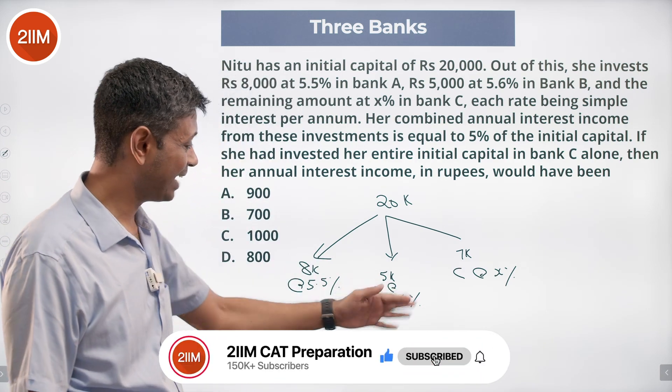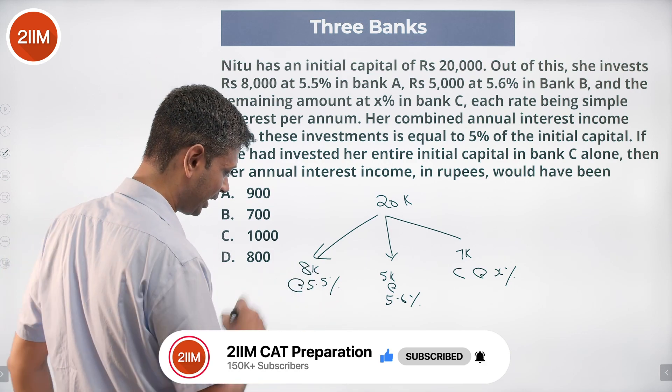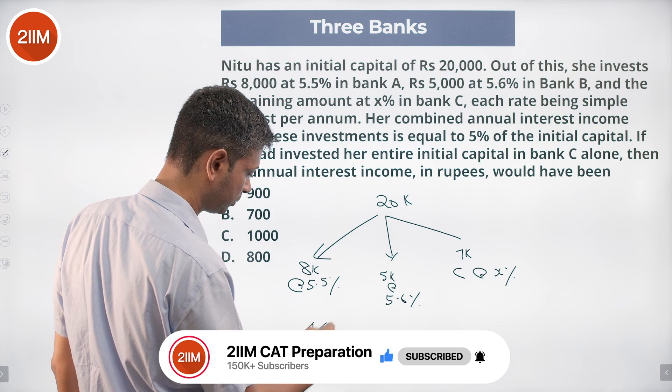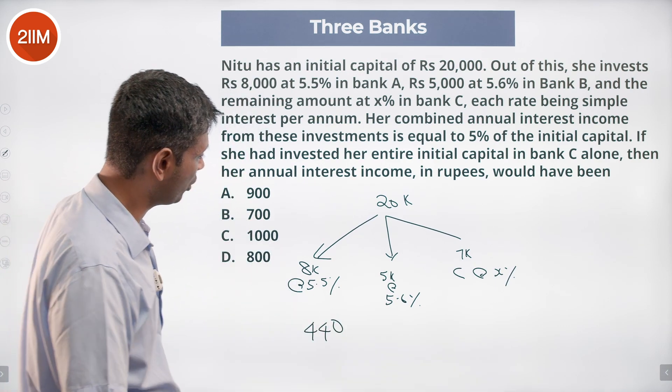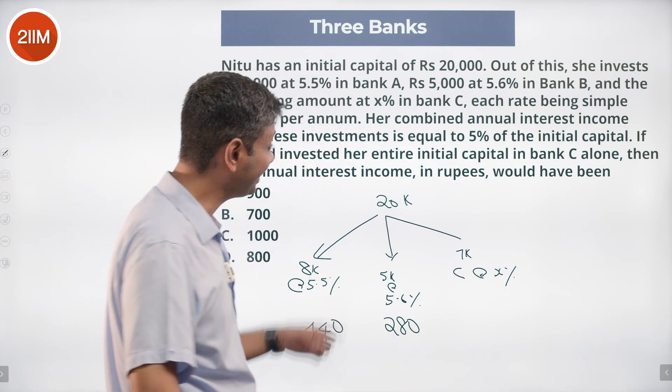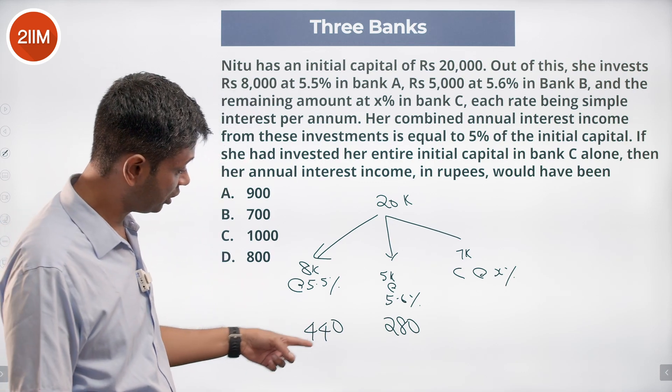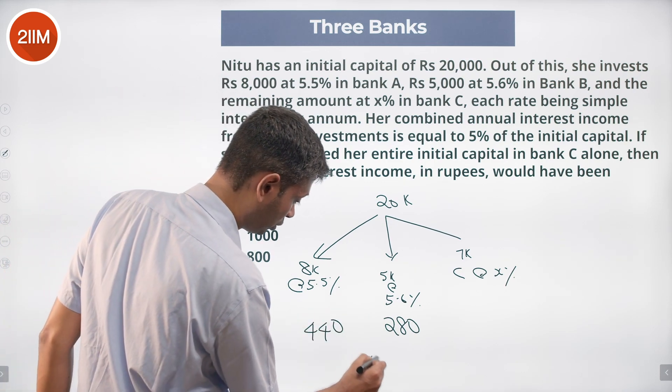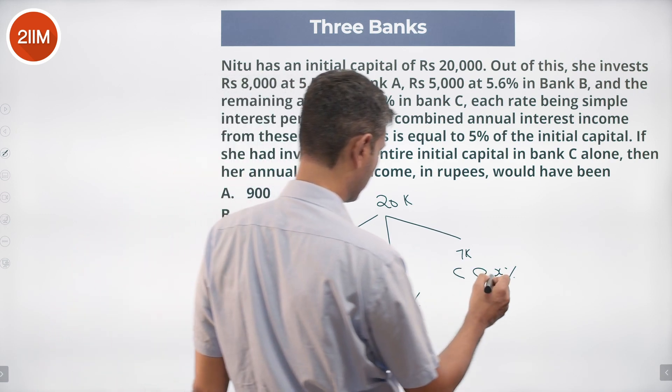We can find the averages with weighted averaging or find the actual amounts. 8K at 5.5% is 440. 5K at 5.6% is 280. 20K at 5% is 1000. 440 plus 280 is 720, so these 7K...